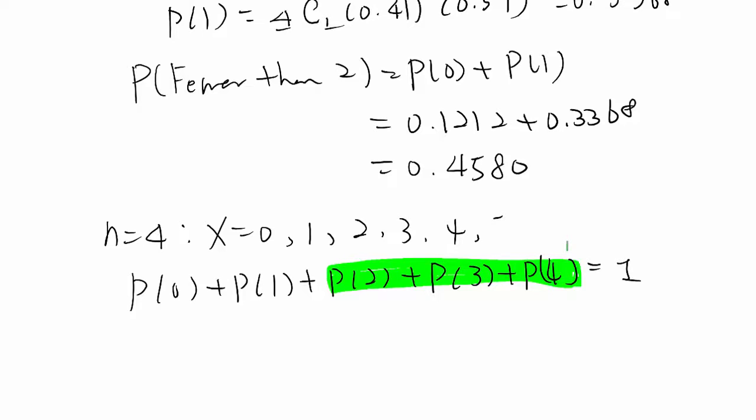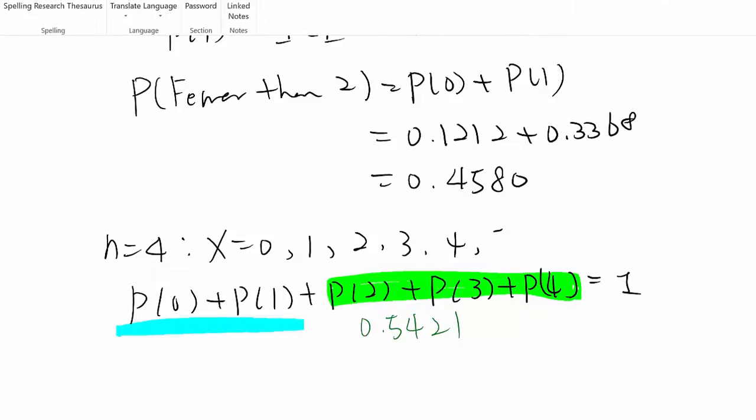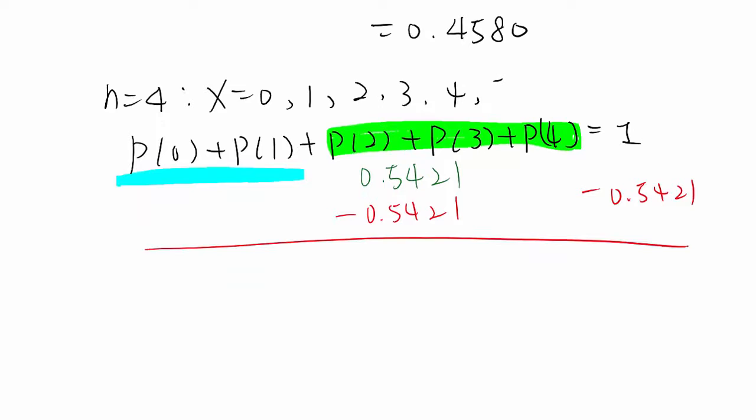So instead of doing letter C, since we know this one, the answer is 0.5421. To find this probability, you actually subtract 0.5421 from both sides. Then what happens here? P(0) plus P(1) equals 1 minus 0.5421, which equals 0.4579.